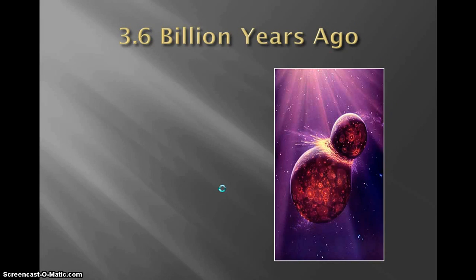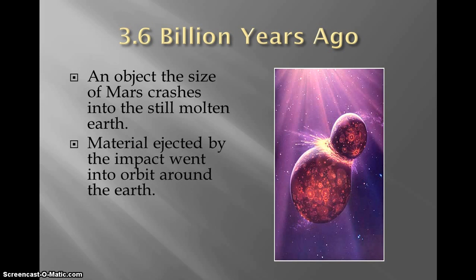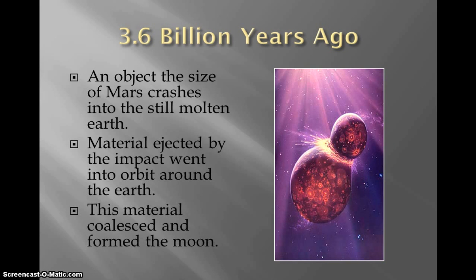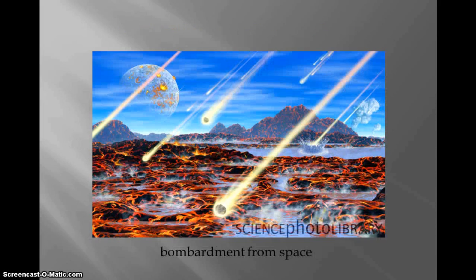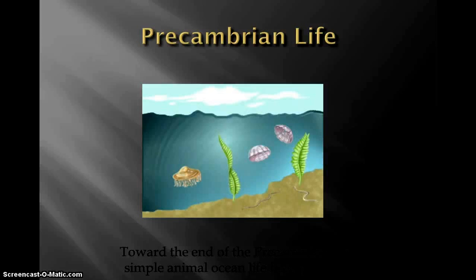3.6 billion years ago, an object the size of Mars crashed into the molten earth and material ejected by the impact went into orbit around the earth. This material coalesced and formed the moon. Then we had a bombardment from space. Toward the end of the Pre-Cambrian era, simple animal ocean life had emerged — so there's life in the oceans.